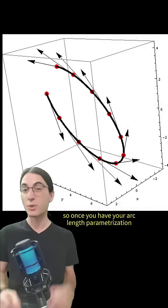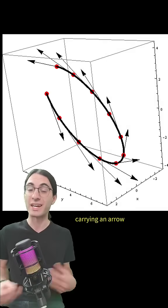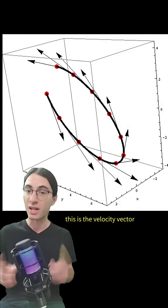They're definitely gone. So once you have your arc length parameterization, you can now ask questions about your curves. Imagine traveling along one of your curves carrying an arrow that always points in the direction that you're traveling. This is the velocity vector.